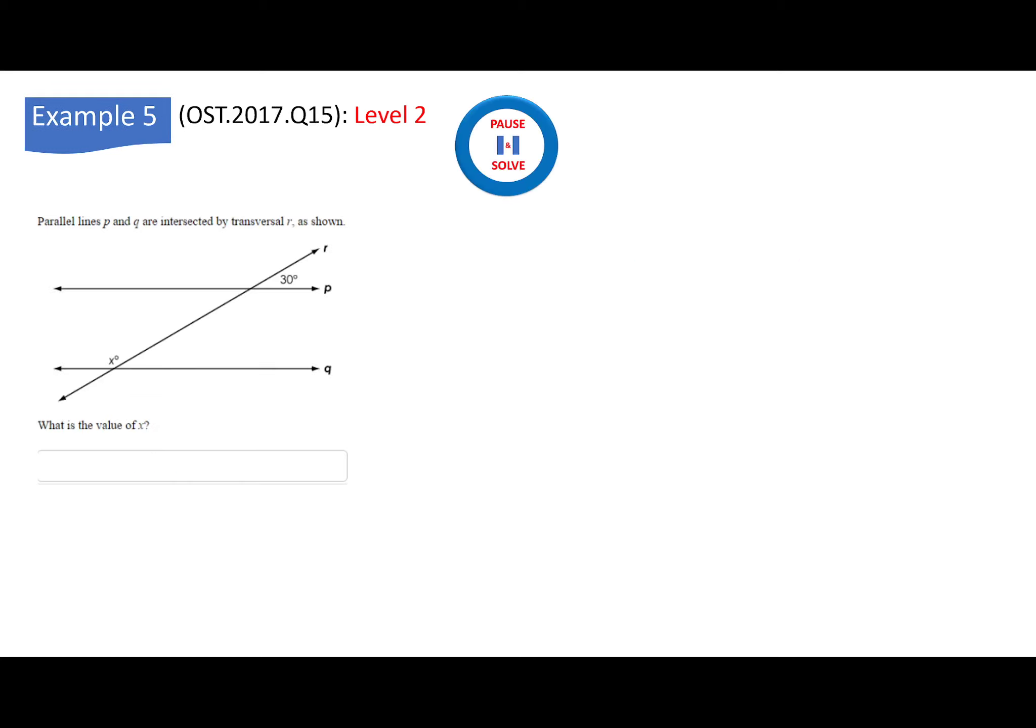Example 5. This one is very similar. They're asking you to find the value of x. So if you want, that's an acute, that's an obtuse. So they add up to 180. This would be 150. Or if you want, this is 30. This one will be 30. And I know these two, 180. So 180 minus 30, 150.